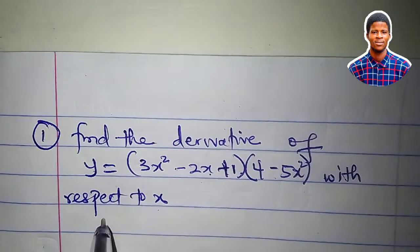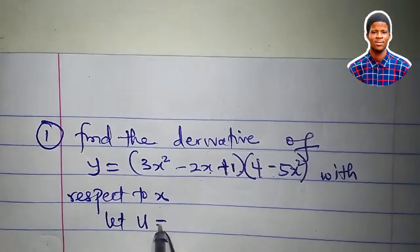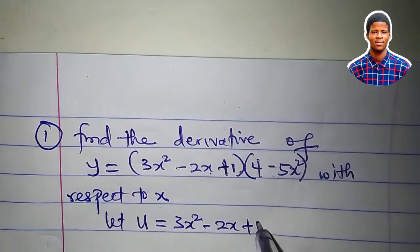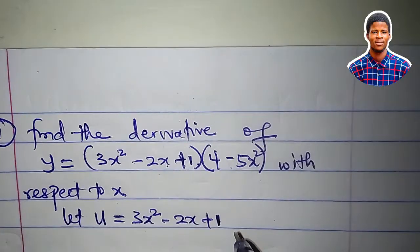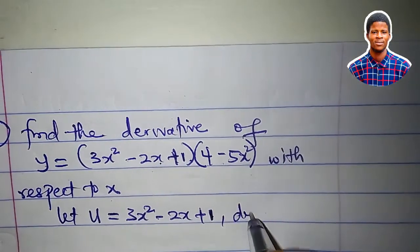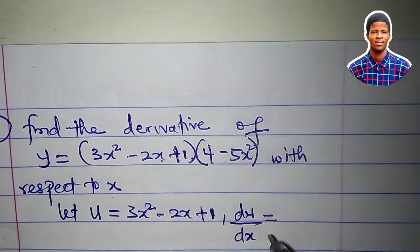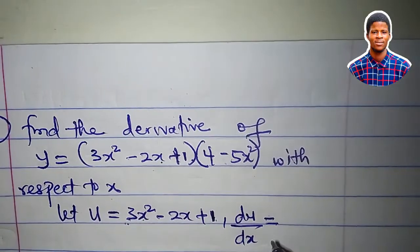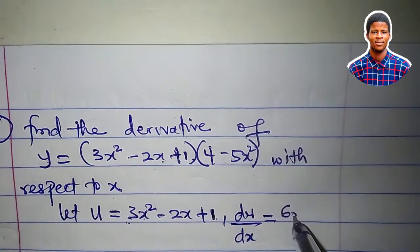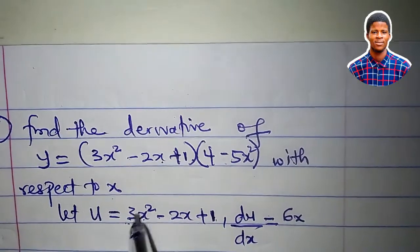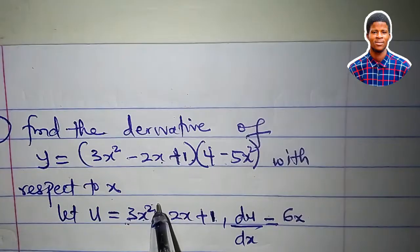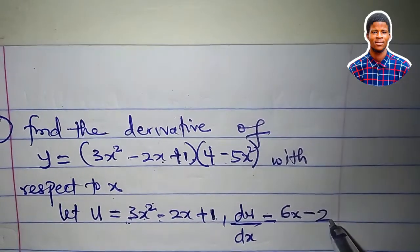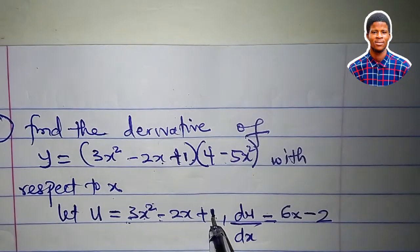So let's say our u be 3x² minus 2x plus 1. So what would be du/dx? du/dx is equal to, let's differentiate this function. Differentiate 3x² to get 6x. Remember, 2 times 3 is 6, 2 minus 1 is 1. Differentiate minus 2x to get minus 2, differentiate 1 to get 0.